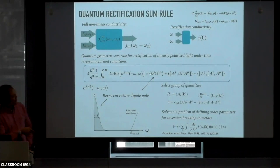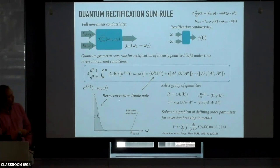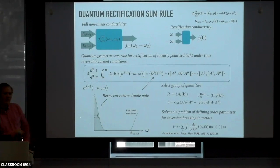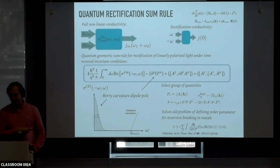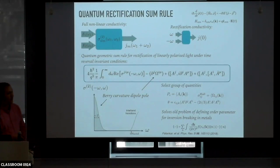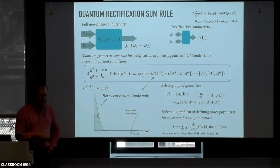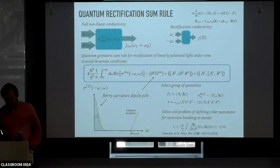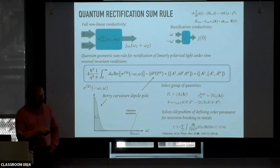Let me explain where the terms come from. The first term is the Berry curvature dipole—this comes from intra-band processes, so it is the spectral weight of a very sharp Drude-like peak near zero frequency, related to this nonlinear acceleration. And the other terms all come from inter-band processes above the inter-band optical threshold, but they are also purely quantum geometric.